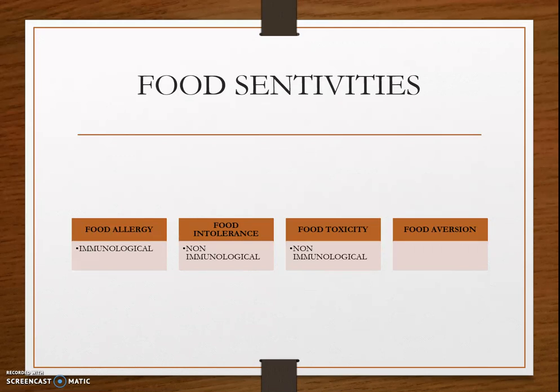Food allergy is an immune system reaction that occurs soon after eating a certain food. Even a tiny amount of the allergy-causing food can trigger signs and symptoms, which may include digestive problems and swollen airways. In some people, food allergy can cause severe symptoms or even a life-threatening reaction such as anaphylaxis. Food allergy is essentially an abnormal response to food triggered by the body's immune system.